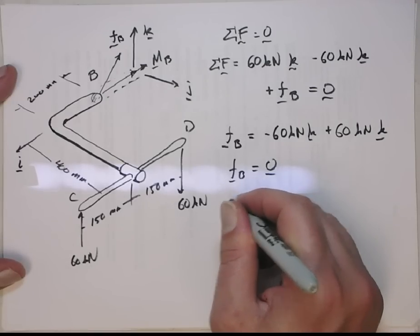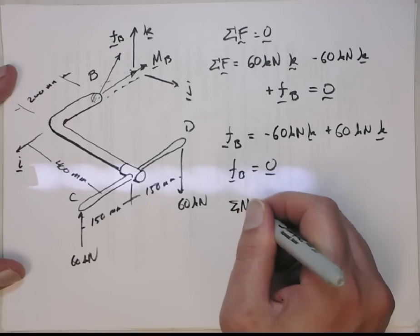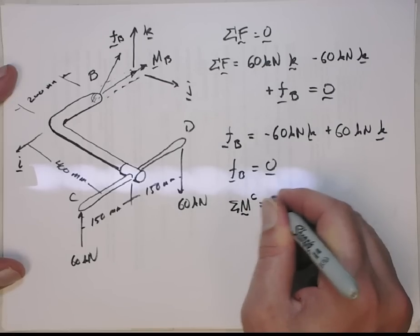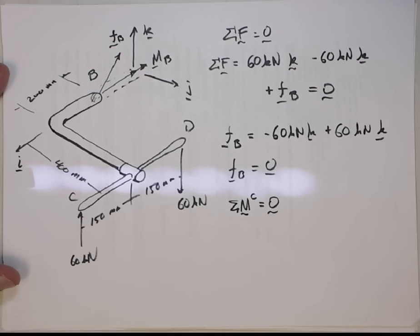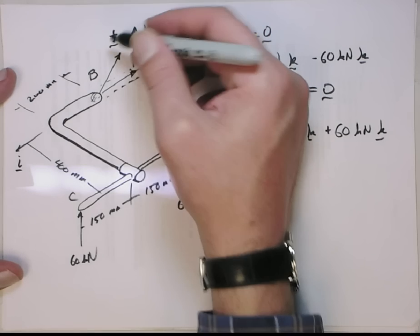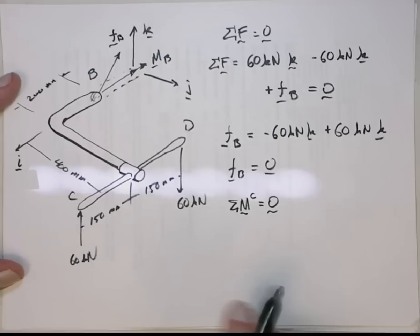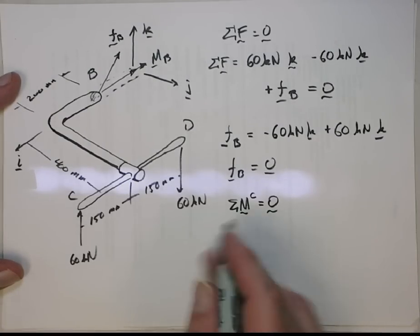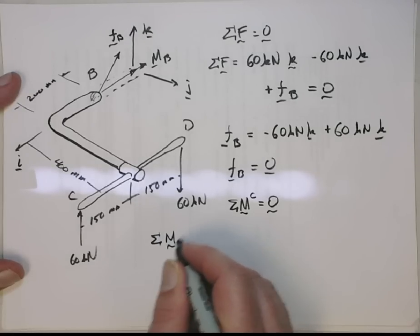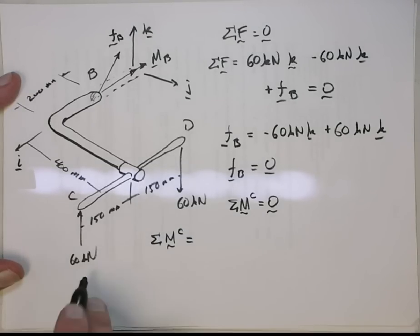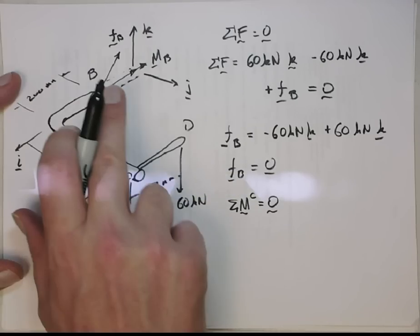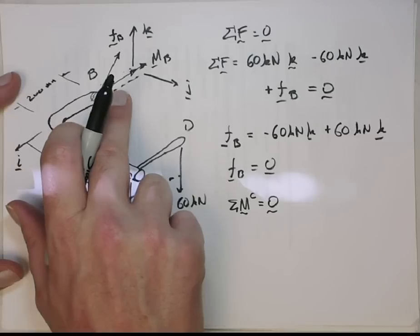So let's do sum of forces around point C, just for the heck of it. So we're going to do sum of moments around point C equal to zero. Alright? This one goes to zero, so we don't have to worry about dealing with this moment. Alright. So the sum of moments around point C equal to zero. So that gives me, alright, this doesn't invoke any moment. So we have the moment from this force, and then the internal reaction moment at point B.